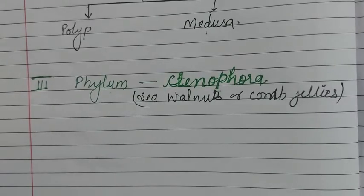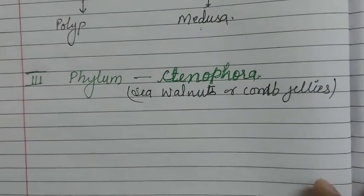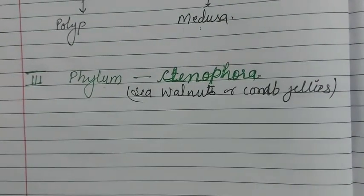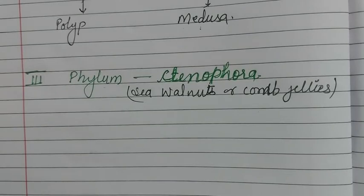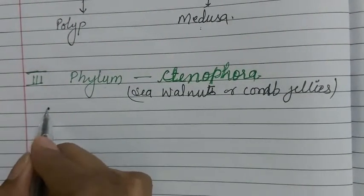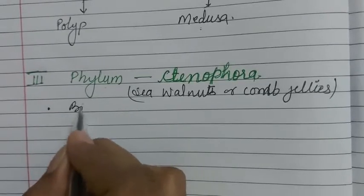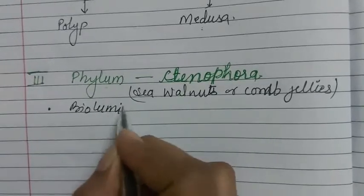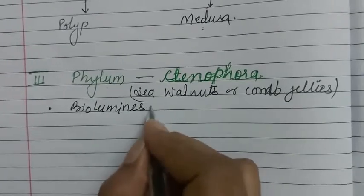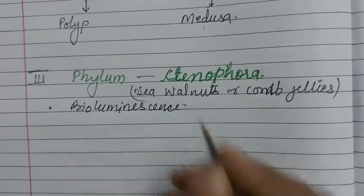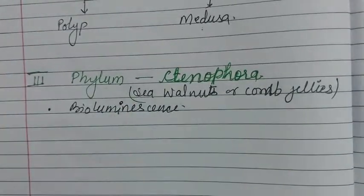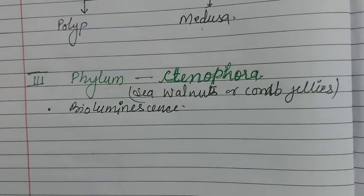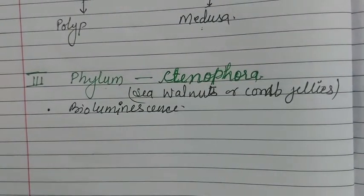The main property of Ctenophora is that they are bioluminescent. Bioluminescent means they emit light from their body — these organisms produce light.